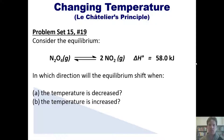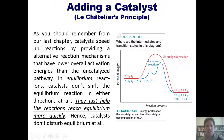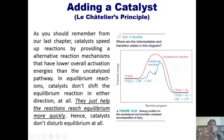Now let's discuss how adding a catalyst affects an equilibrium reaction. Catalysts speed up reactions by providing an alternative reaction mechanism with a lower overall activation energy than the uncatalyzed pathway. In an equilibrium scenario, a catalyst simply makes the back-and-forth exchange happen faster, but it does not change the relative amounts of products and reactants or disturb equilibrium at all.